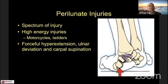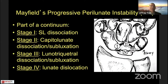Perilunate injuries represent a spectrum of injury. These are typically high-energy injuries — in the United States, many motorcycle injuries, falls from ladders or scaffolds — typically not from a standing-height fall. The mechanism is usually forceful hyperextension with ulnar deviation and carpal supination, which leads to this injury.